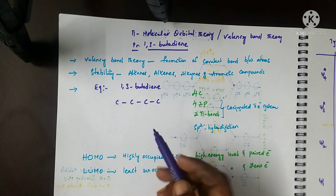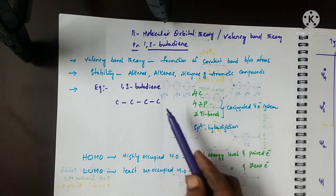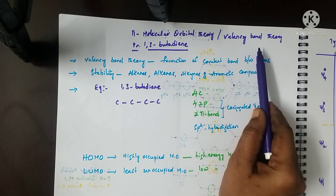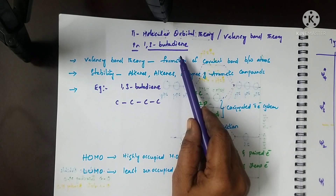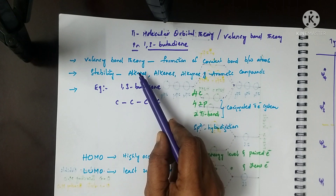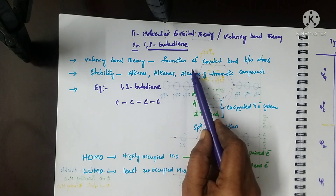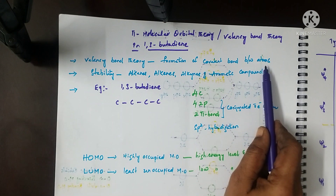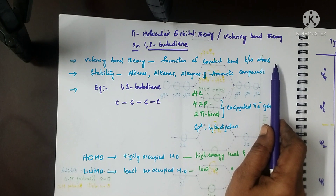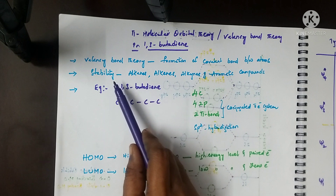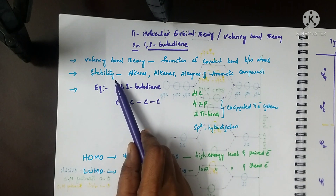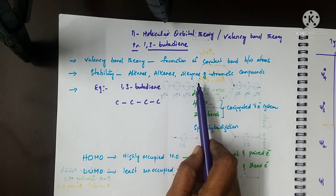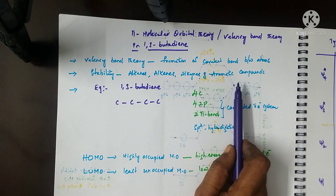Hello students. Today I will share a video about pi molecular orbital theory, or valence bond theory, in 1,3-butadiene. Valence bond theory states that formation of covalent bonds between atoms occurs by overlapping of atomic orbitals. It explains about stability in alkenes, alkanes, alkynes, and aromatic compounds.